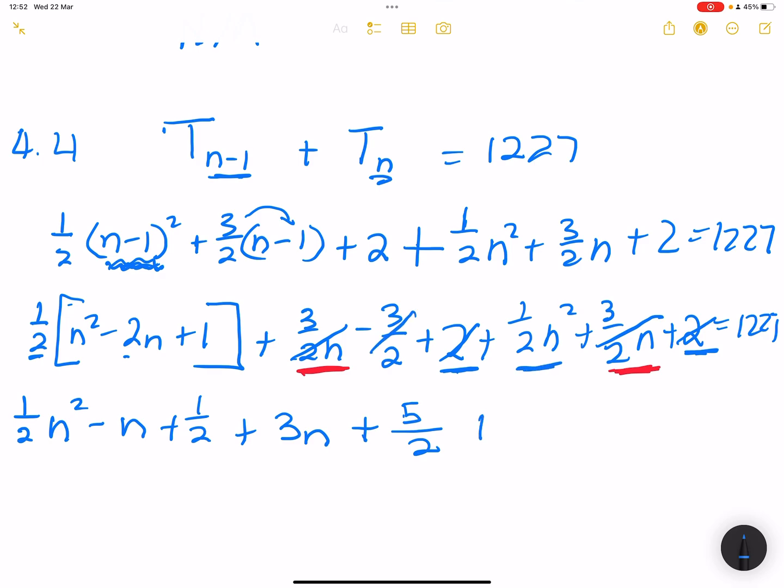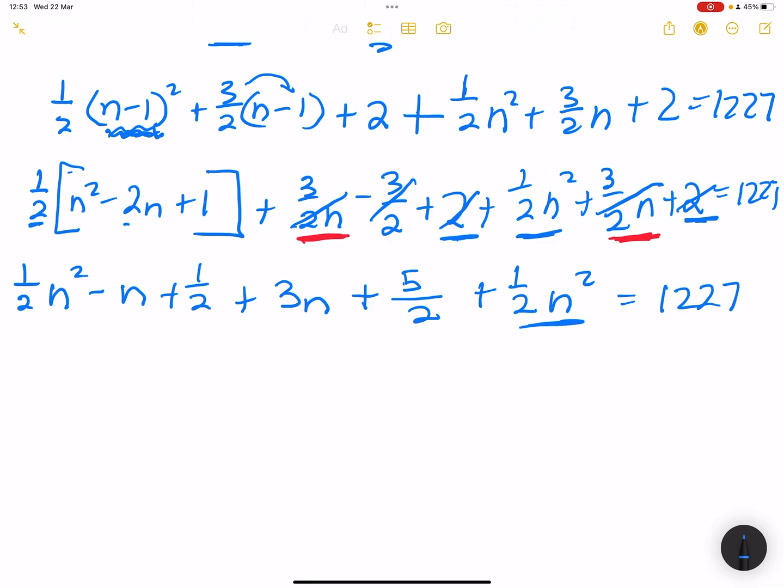And then I have got 2 plus 2, which is 4. Minus 3 over 2. In this case, that will give me 5 over 2. So that would be 4 minus 3 over 2. Yeah, that's 2.5 or to put it in fraction form 5 over 2. So that would be plus 5 over 2. So I've gotten rid of those. But remember, we still have plus 1 over 2 N squared. And this is 1227. Right, so let's try and simplify even further. So there's my N squared terms. Half N squared plus half N squared. That will give me N squared. And I've got for N, I've got minus N plus 3N, which would give me plus 2N. So I've gotten rid of those.